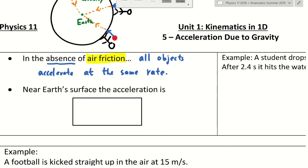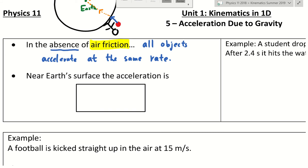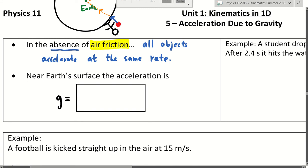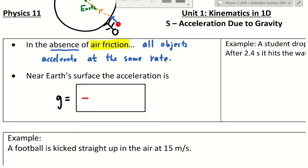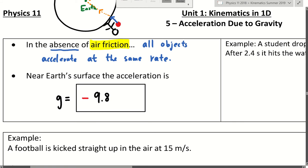Assuming you have watched the videos: every object, as long as you can take out air resistance as a variable, falls near the earth's surface at exactly the same rate. They don't have the same speed all the time because they accelerate, but the acceleration is the same for all of them. That acceleration has been measured many, many times, and it turns out the value of acceleration near the surface of the earth is approximately 9.79. We use 9.8, just rounding off the last significant figure.